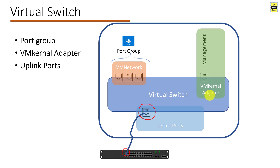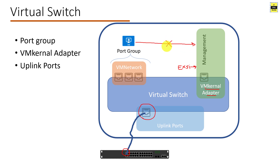The vm kernel adapter is used by the ESXi host to handle system traffic like vSphere vMotion, IP storage, fault tolerance, and vSAN. You don't assign vm kernel adapter to a virtual machine. vm kernel adapter is specifically for system traffic - it is for the ESXi host to communicate for service-related activities in a vSphere based environment.